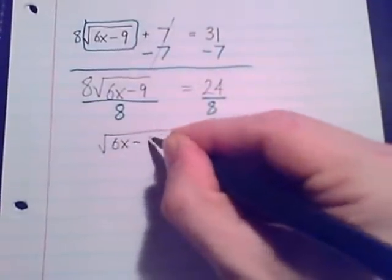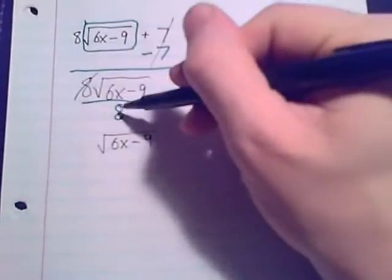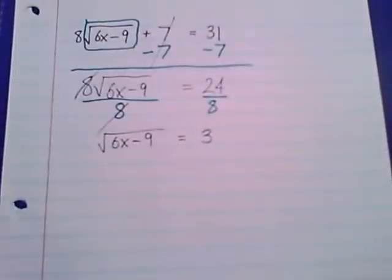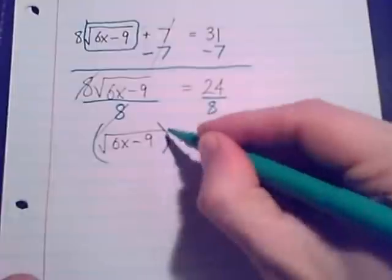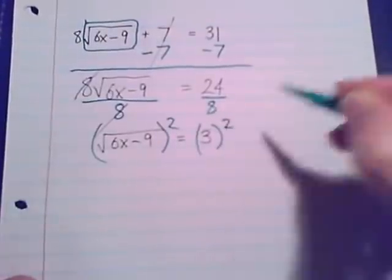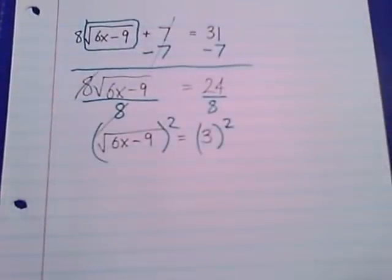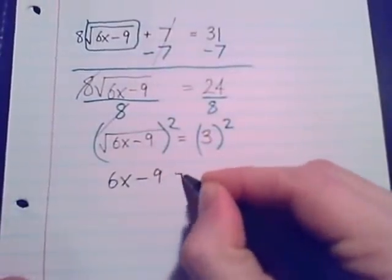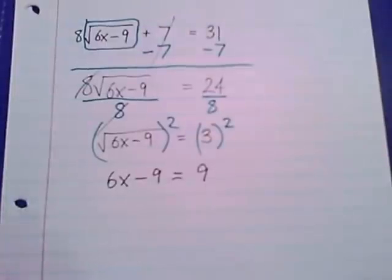Square root of 6x minus 9. Those 8's cancel. Here, this is a divide evenly equals 3. Now the radical is isolated. Now I can do square both sides. The left side, square root and the square cancel. 6x minus 9 equals 9.